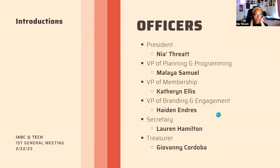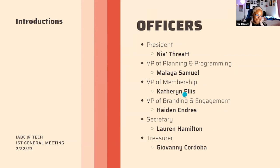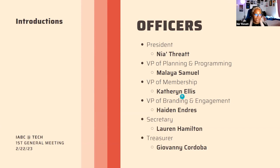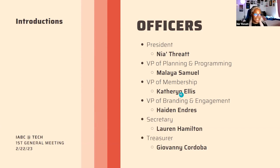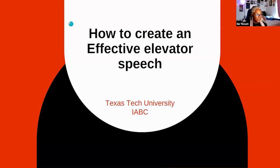My name is Nia, I'm the president of the organization. We also have a whole line of officers. The VP of Planning and Programming is Malia Samuel. The VP of Membership is Catherine Ellis. We have the VP of Branding and Engagement, Hayden Andres. The secretary, Lauren Hamilton. And our treasurer, Giovanni, is actually having a baby right now, so he is not able to make the meeting. Now we're going to go into our elevator pitch section.